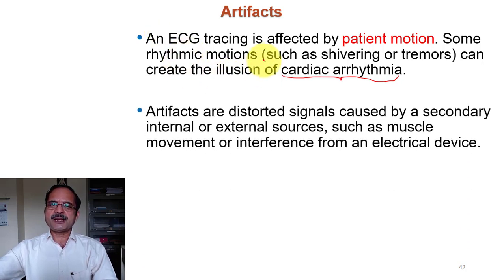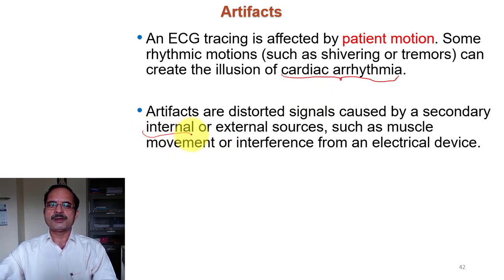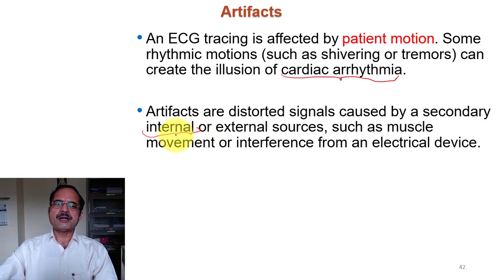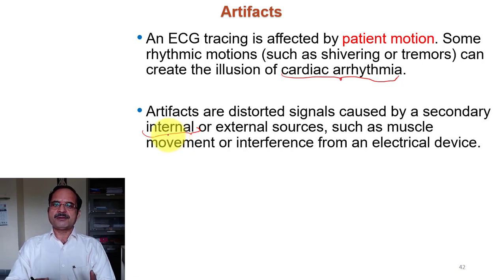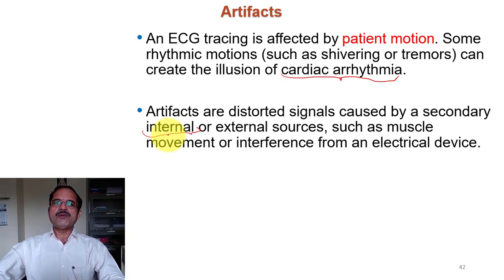Artifacts are distorted signals caused by secondary internal or external sources. When we say internal sources, that means sources within the body itself. You may ask how noise is produced within the body — when we connect electrodes for the measurement of the ECG signal, we are interested in the electrical signals generated by the heart.